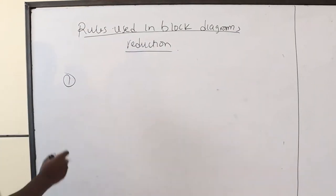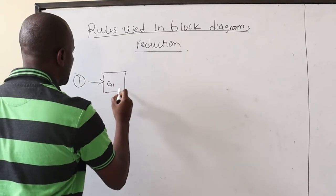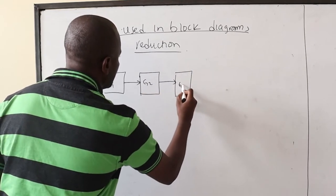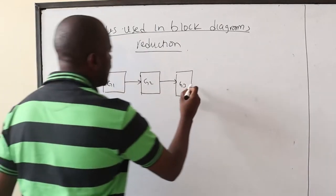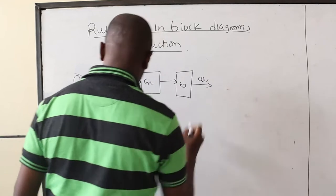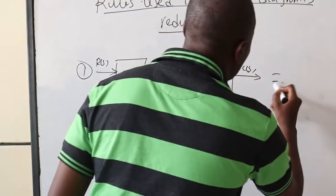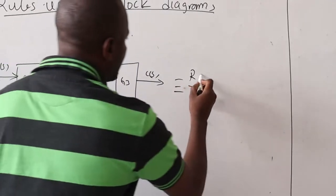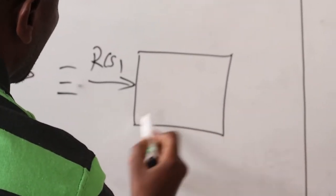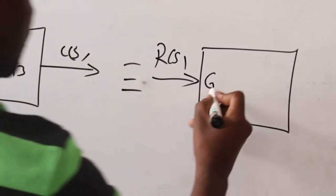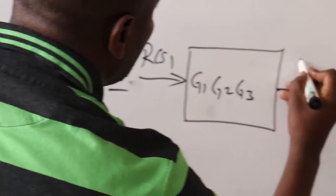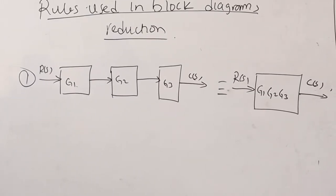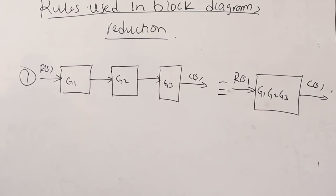For example, if we have several blocks in series — G1, then G2, then G3 — with R(s) as the input and C(s) as the output, then under the first rule we can reduce this to a single block containing the product G1·G2·G3, with input R(s) and output C(s).